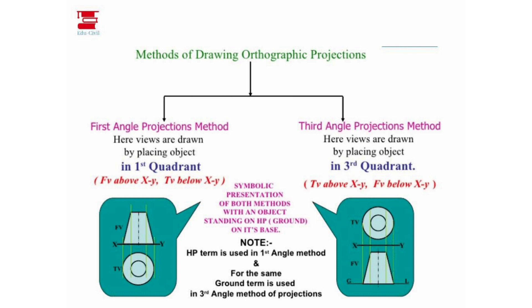We will see the views in different planes. In third angle projection, we will see the object in the third corner, and we will see the views in the exact shape of the object.